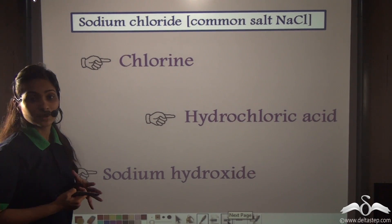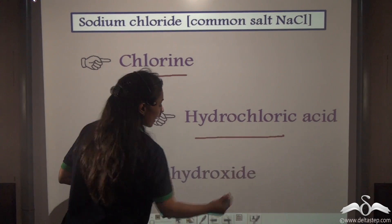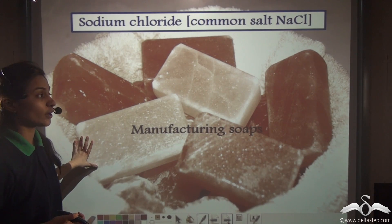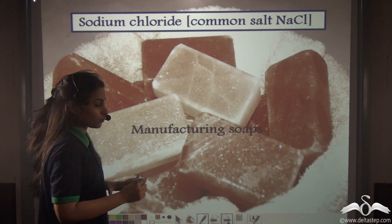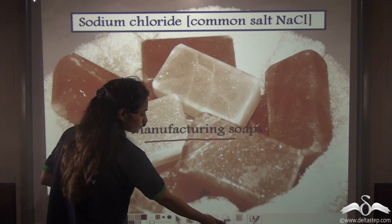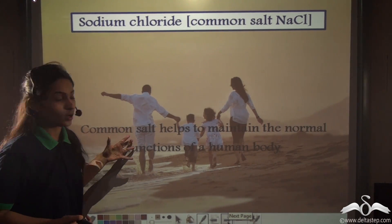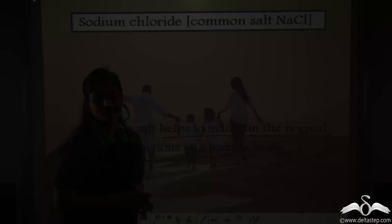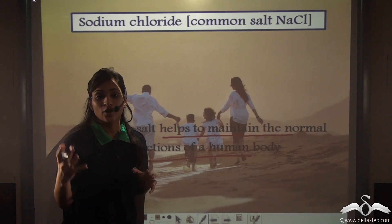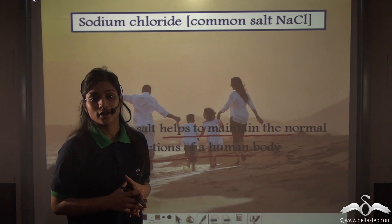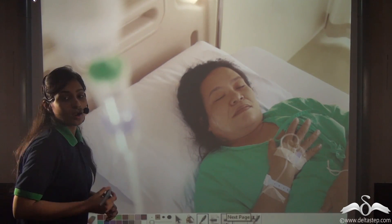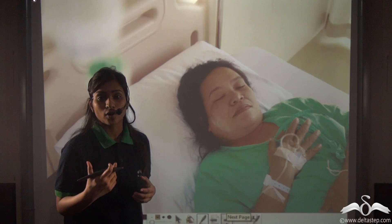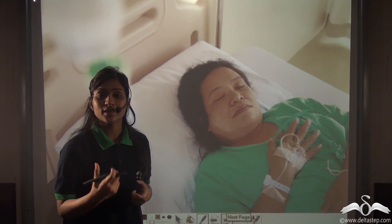Sodium chloride is also used in the manufacture of chlorine, hydrochloric acid and sodium hydroxide, and it is used in manufacturing soaps. Common salt also helps in maintaining the normal functions of the human body — it regulates the flow and volume of blood. That is why when a person suffers from dehydration and cannot take in water and salts externally, saline water is given to them.